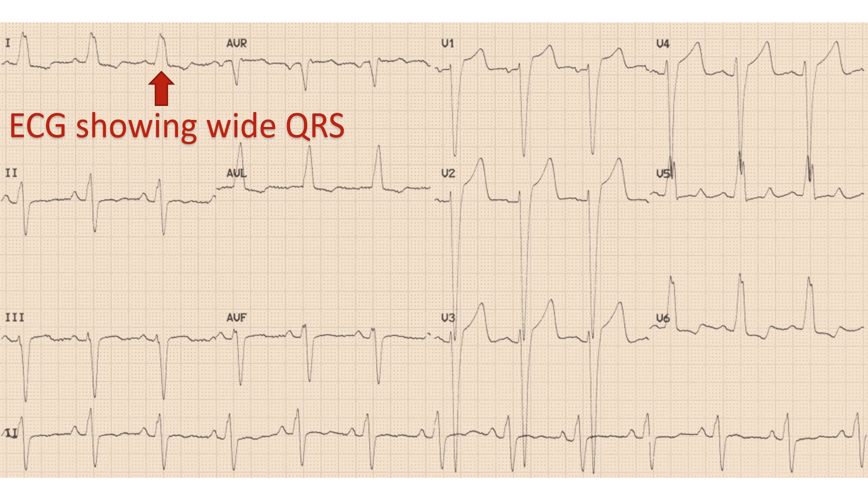The QRS complex represents the electrical activation of the ventricles. If the QRS is widened, it is presumed that there is dyssynchrony. A left bundle branch block pattern on ECG with wide QRS complex is the often cited criteria. Left bundle branch block is the electrical block in the part of the conduction system which takes signals to the left ventricle.